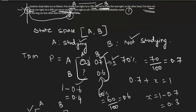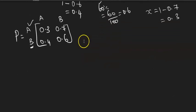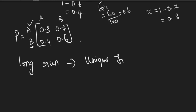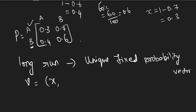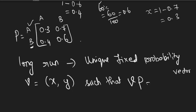Now the second question is: in the long run, how often does he study? To calculate this, whenever they ask about the long run, you have to find the unique fixed probability vector. Here only two options are there, so your unique fixed probability vector V also has only two components, X and Y, such that V times P equals V. The condition is X plus Y equals 1 — this condition is very, very important.